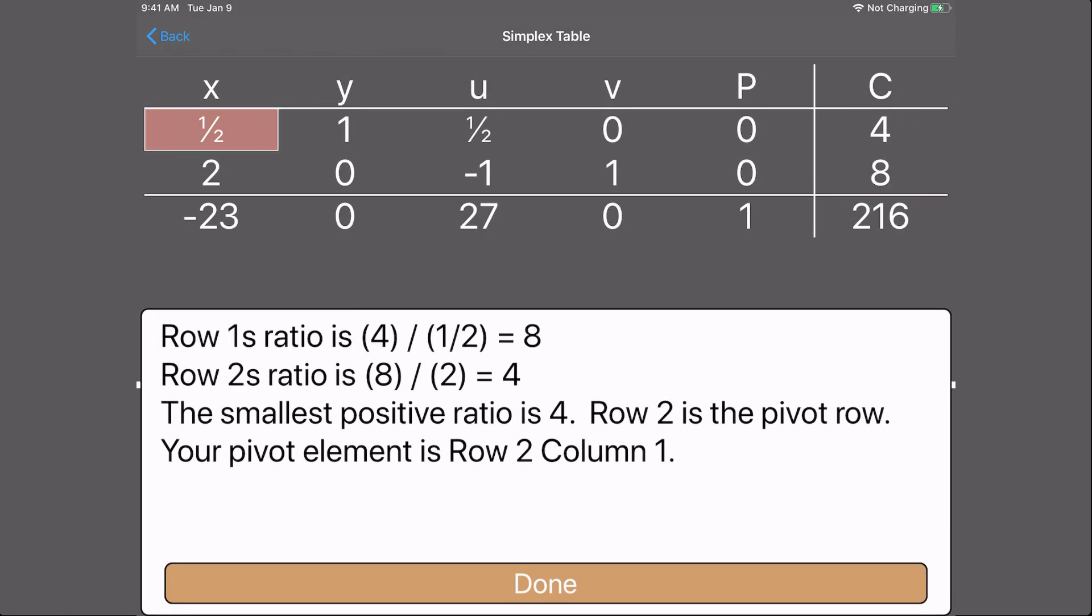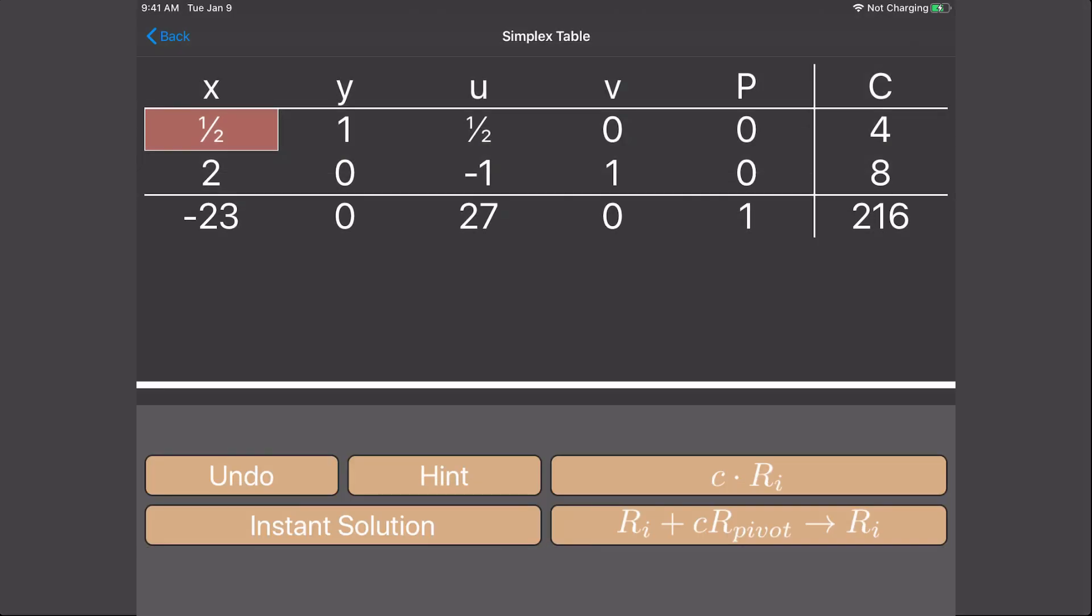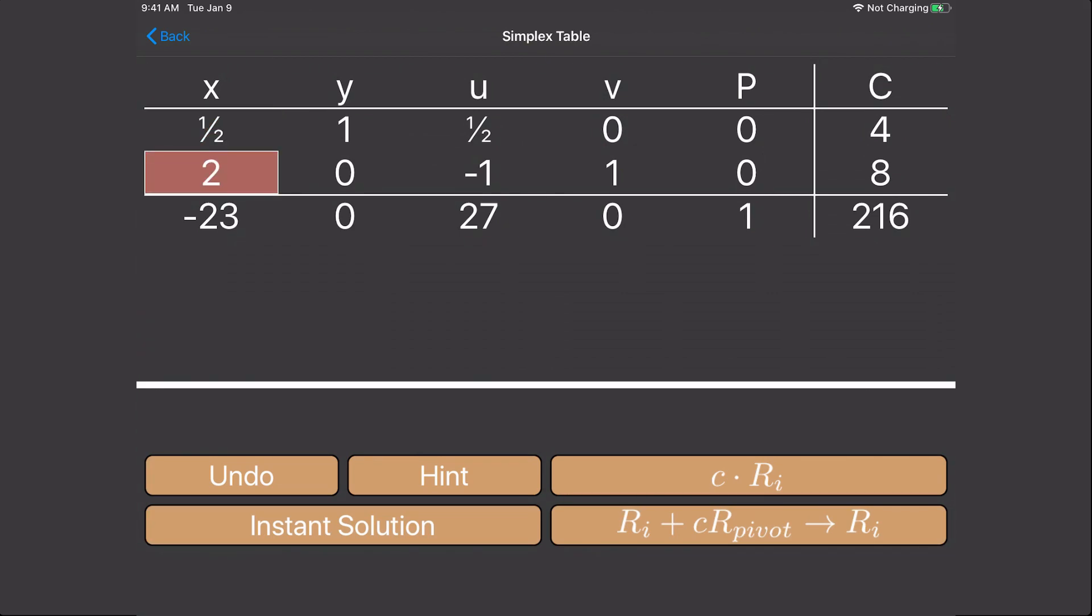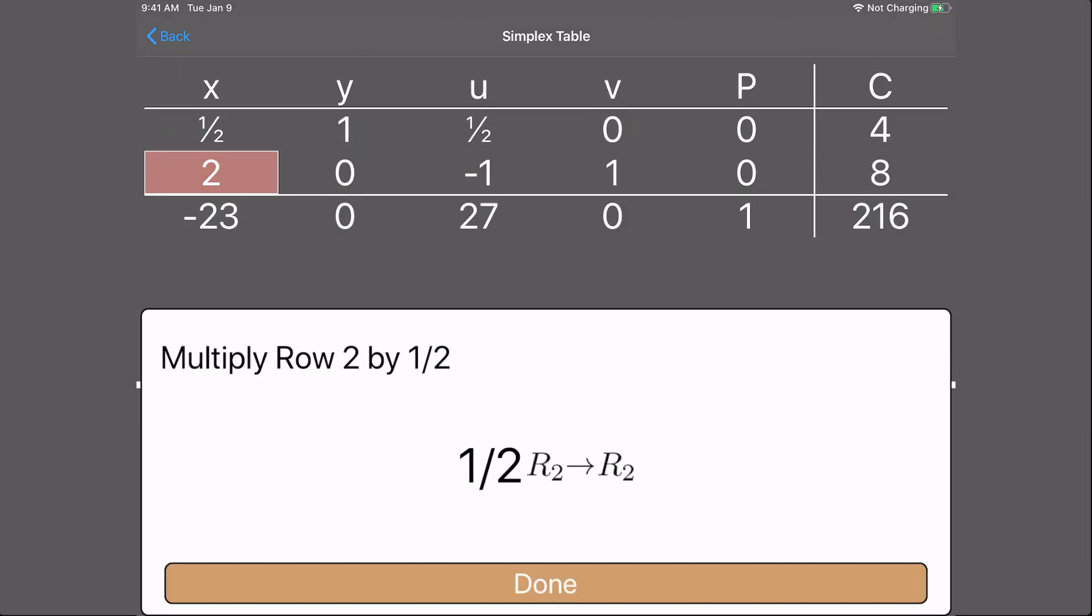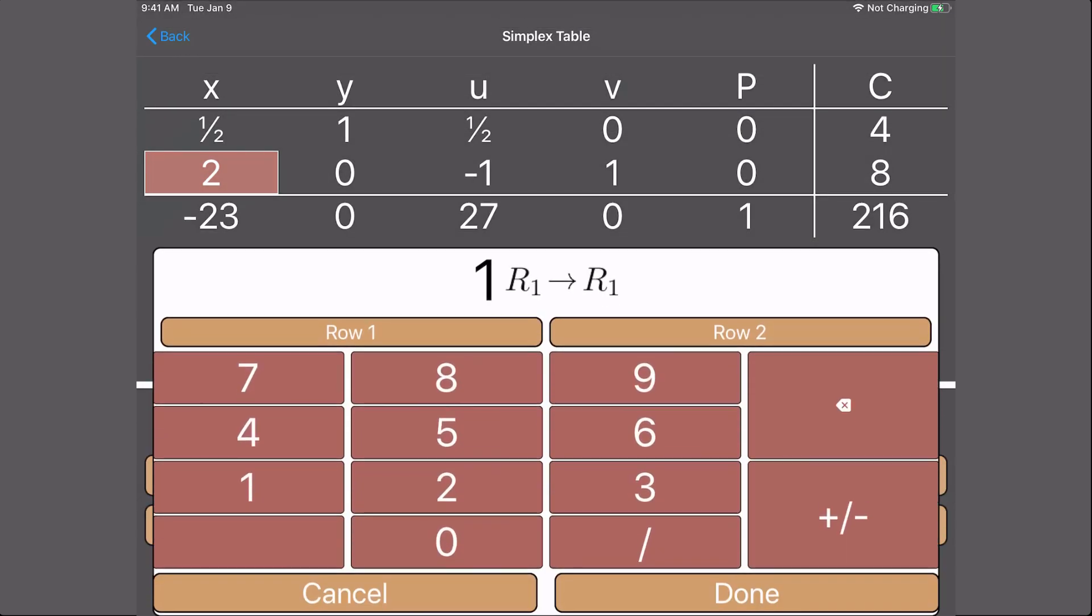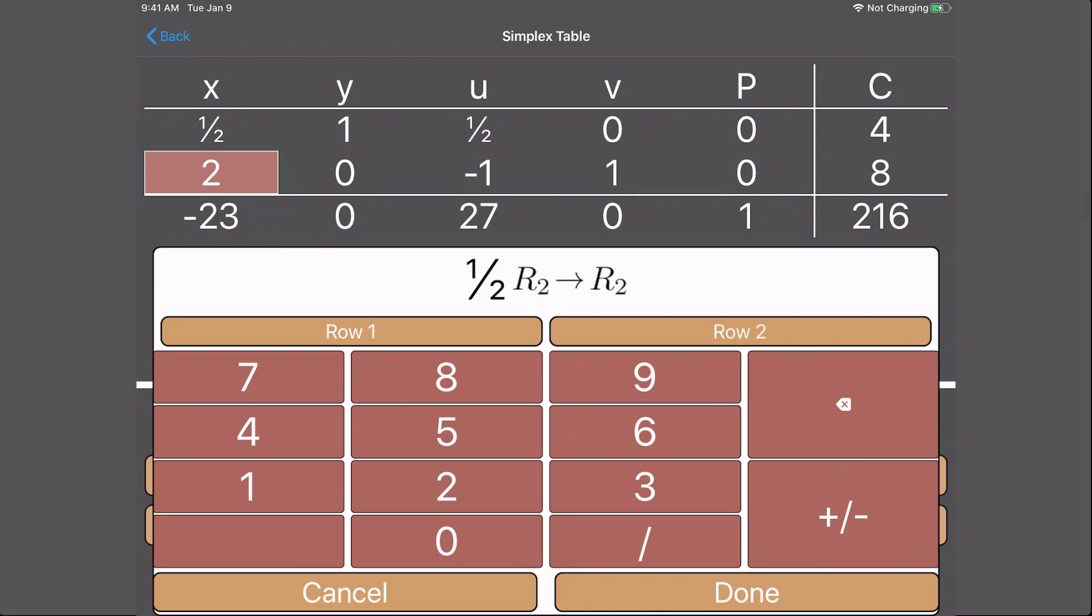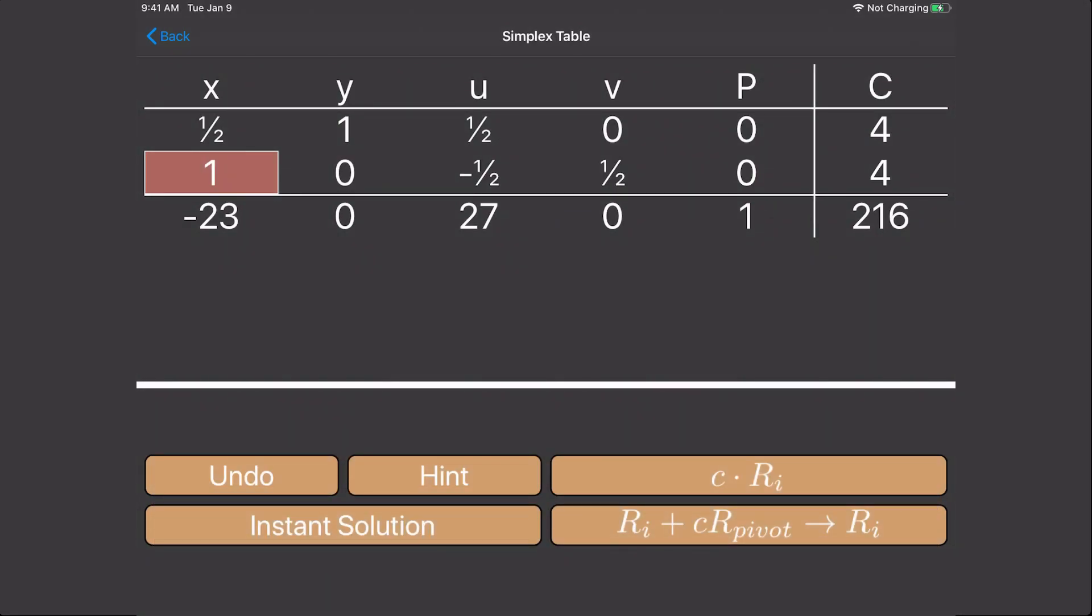4 divided by 1 half equals 8. 8 divided by 2 is 4. Now row 2 has the smallest positive ratio, so it's going to be the pivot row. Our pivot element is in row 2, column 1. Next we need to scale the pivot element. We do this by multiplying row 2 by 1 half. That gives us our 1. Using the app it becomes 1, 0, negative 1 half, 1 half, 0, 4.